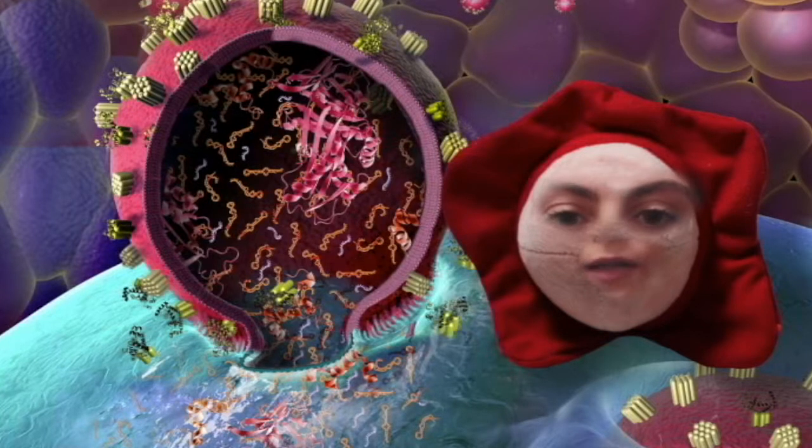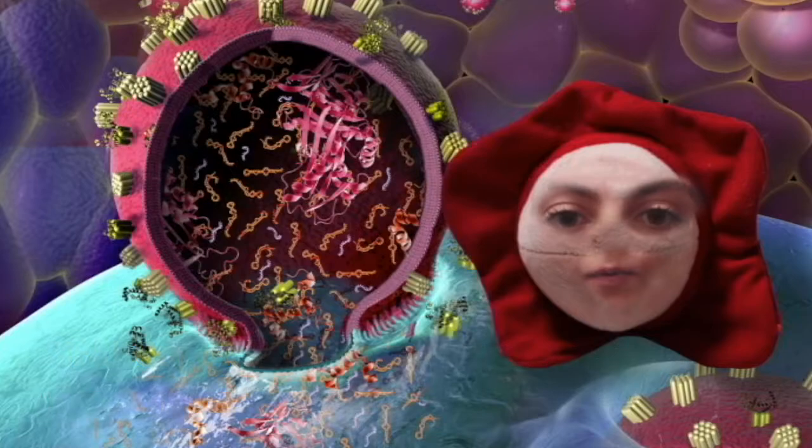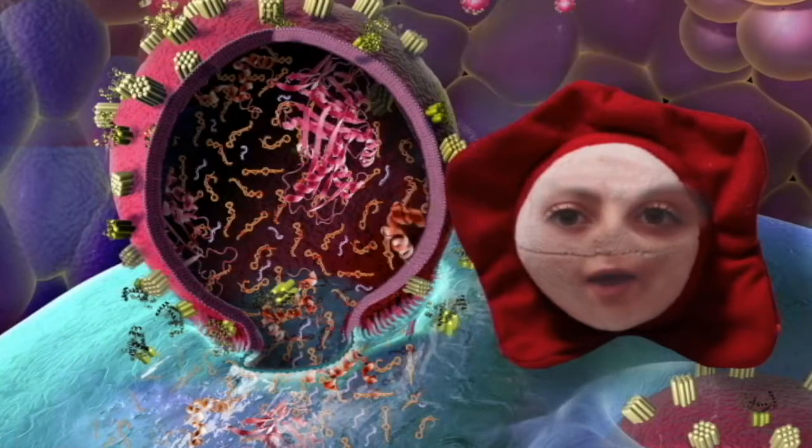When I'm finished hijacking and replicating, I can be transported to the nervous system in my viral capsid. Nerve cells help me out and transport me to a specific part of the spinal cord.